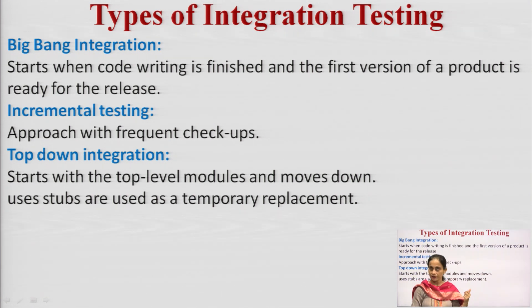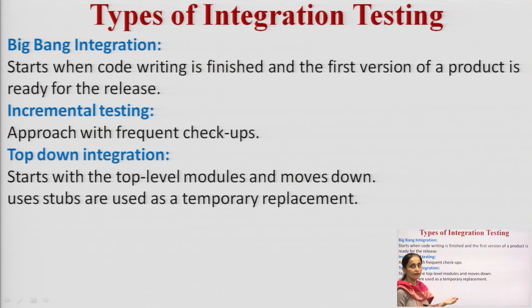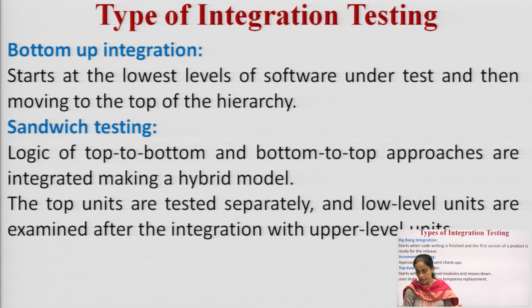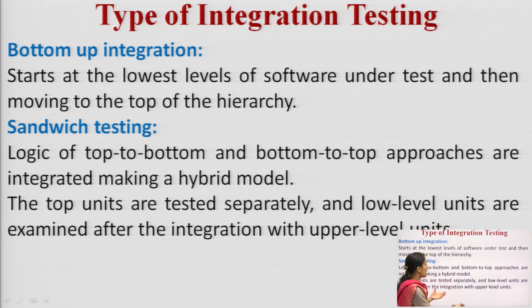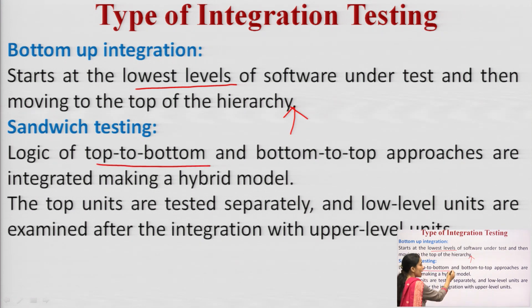There are five types. Big bang means it starts when code writing is finished and the first version is ready. Incremental means frequent checkups. Top-down means moving from the top downward. Bottom-up means starting from the lower levels and moving up.